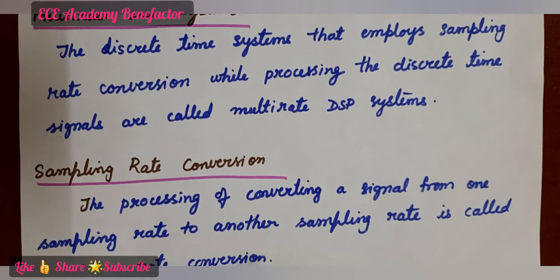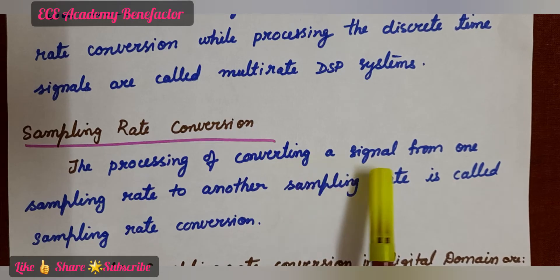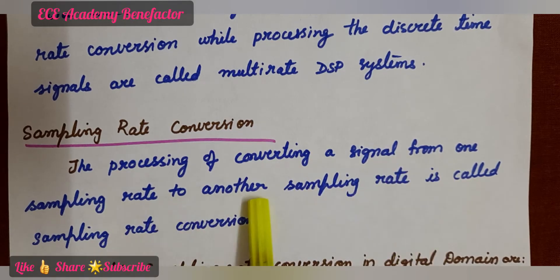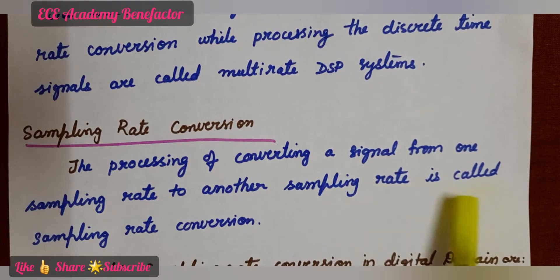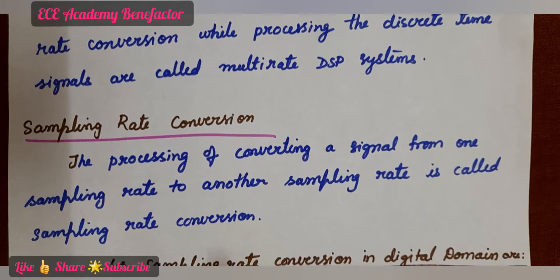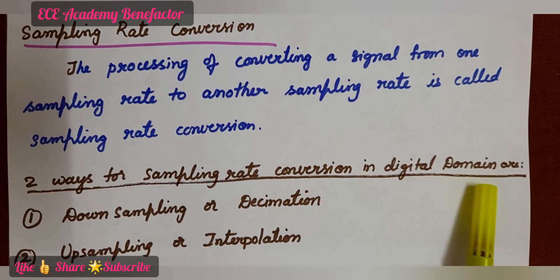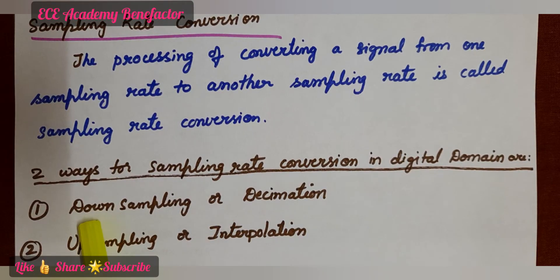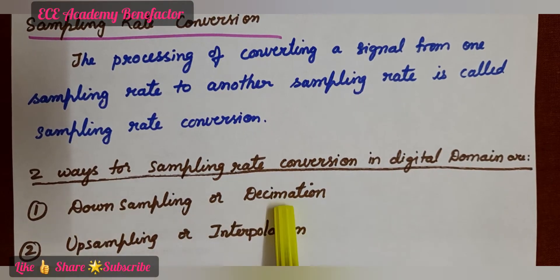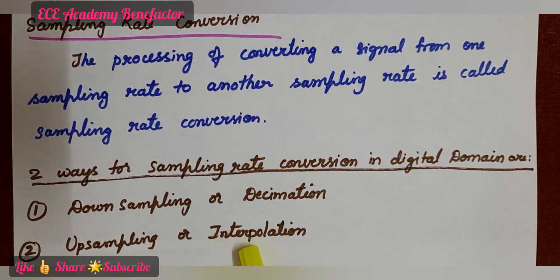The third definition is sampling rate conversion. The process of converting a signal from one sampling rate to another sampling rate is called sampling rate conversion. The two ways for sampling rate conversion in the digital domain are: first, down sampling, also known as decimation; and second, up sampling, also known as interpolation.